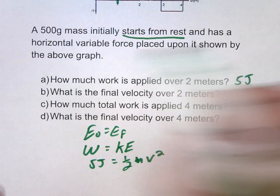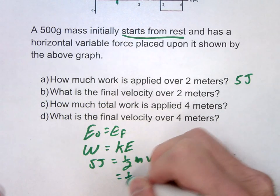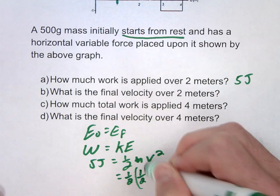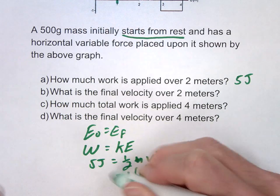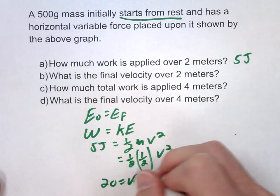The mass was 500 grams. Don't forget to convert that into kilograms. So it's going to be 1/2. I'm just going to write this as a 1/2 kilogram times V squared. So that's going to give me 20 equals V squared.